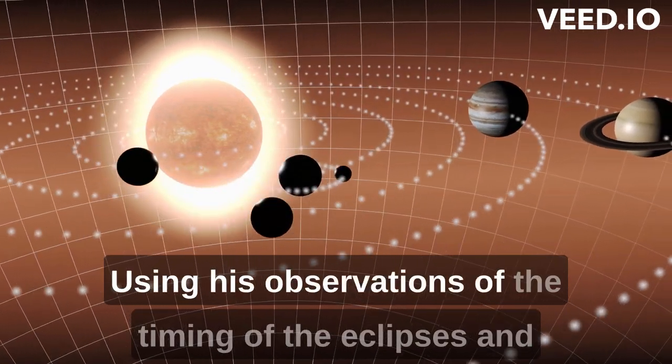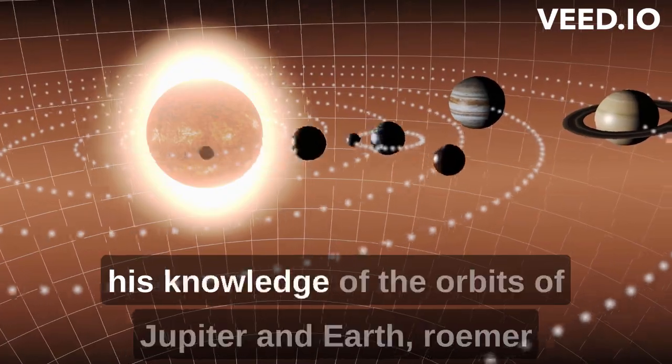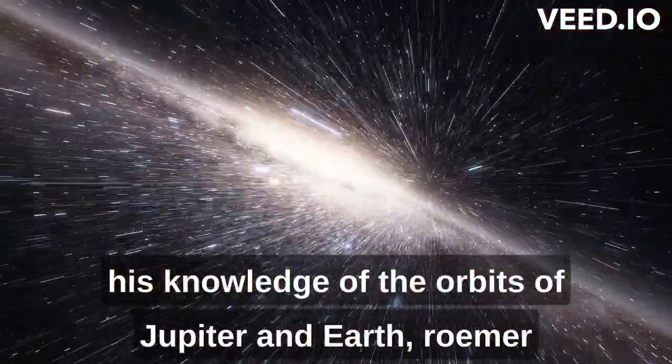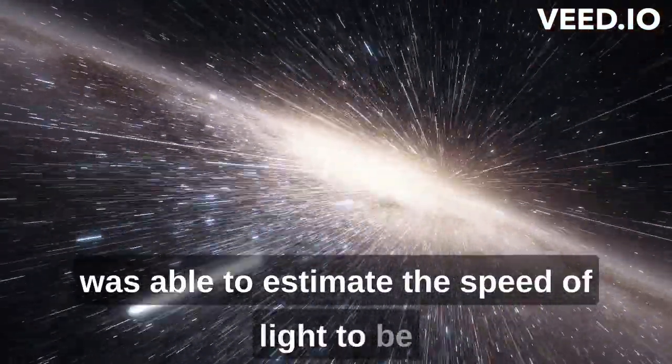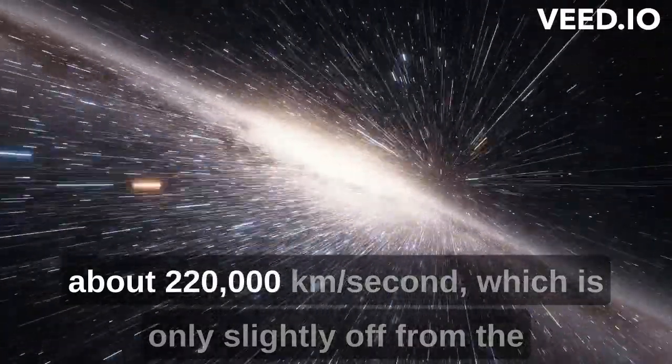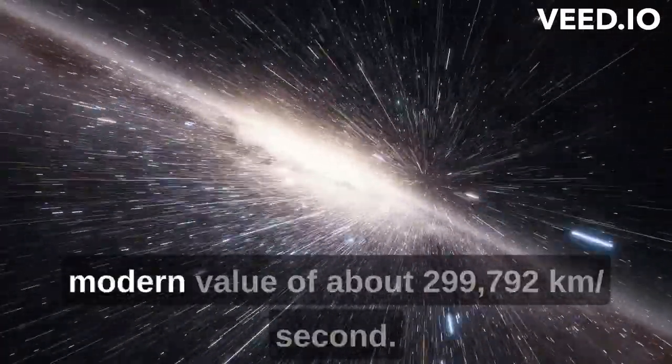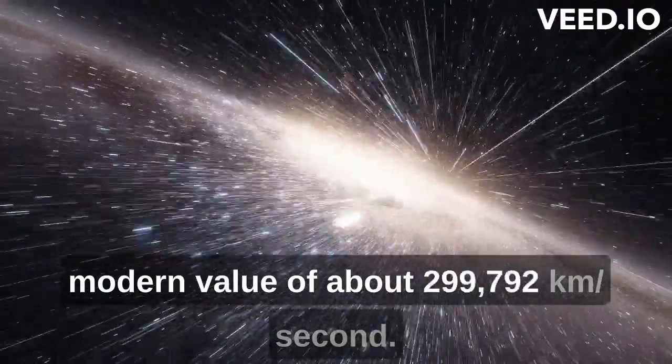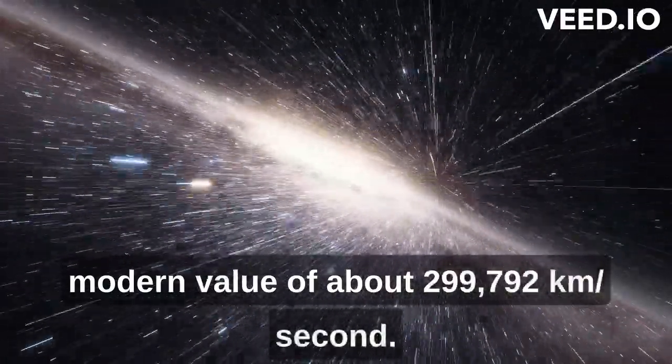Using his observations of the timing of the eclipses and his knowledge of the orbits of Jupiter and Earth, Roemer was able to estimate the speed of light to be about 220,000 km per second, which is only slightly off from the modern value of about 299,792 km per second.